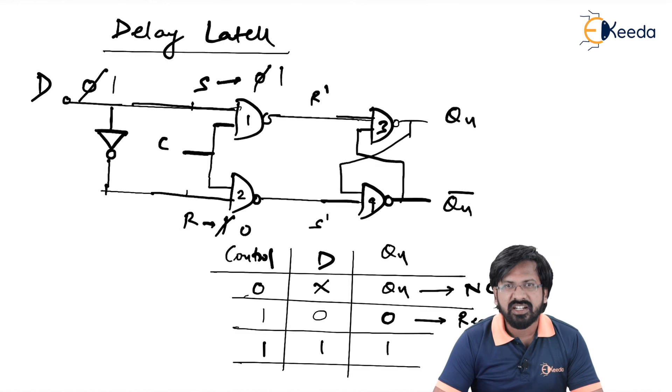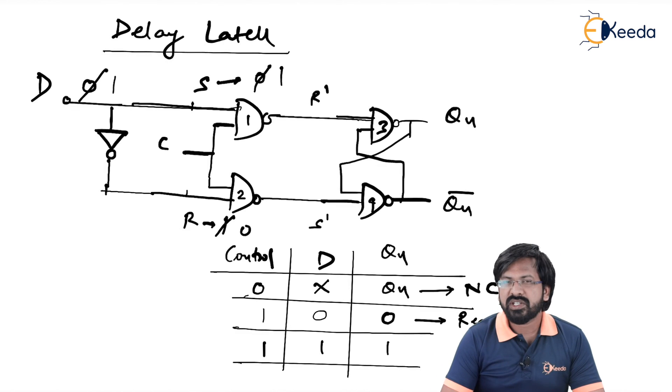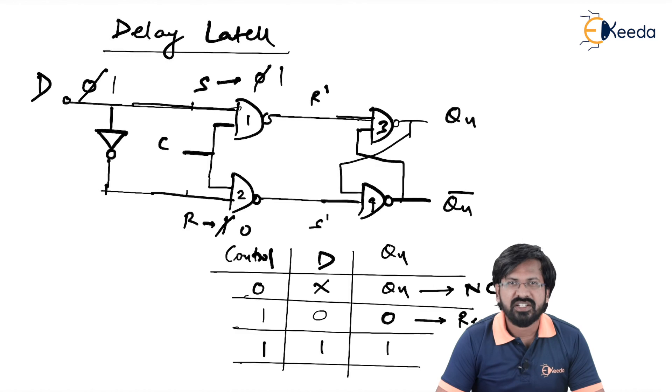See, when D equal to 0, what is the status of Qn? It is 0. When D equal to 1, what is the status of Qn? It is 1. What does that mean? You can remember in a way, whatever that you apply on D input, same as it is, you get at output. You apply 0, you get 0. You apply 1, you get 1, provided control input equal to 1. Remember, when control input equal to 0, whatever that you apply on D does not get transferred to output, because output remains no change. No change means output remains same as the previous. So I am sure you must have understood what is mean by D latch. Thank you.